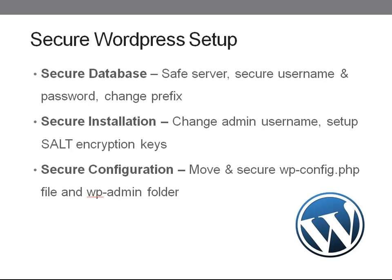We'll start off by installing WordPress with a secure setup. We'll create a secure database with the appropriate logins and prefix. This includes a secure installation, changing the admin username, setting up salt encryption keys, and then a secure configuration which may involve moving the config file and protecting the admin folder.